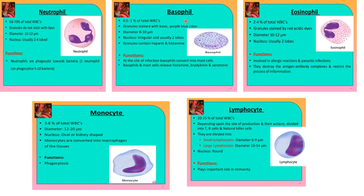The second type of granulocyte is the basophil. It forms 0.5 to 1% of total WBCs. Granules stain with basic purple-blue dye. Diameter is 8 to 10 nanometers. The nucleus is irregular and usually 2 lobes or twisted. Granules contain heparin and histamine. They are basically present at the site of infection, where they get converted into mast cells, and also at allergic reactions. Basophils and mast cells release histamine, bradykinin, and serotonin.